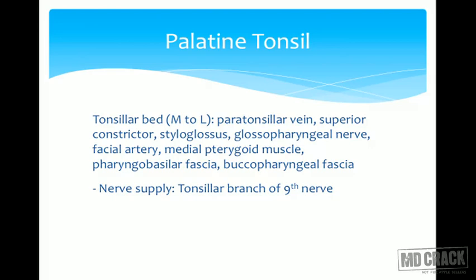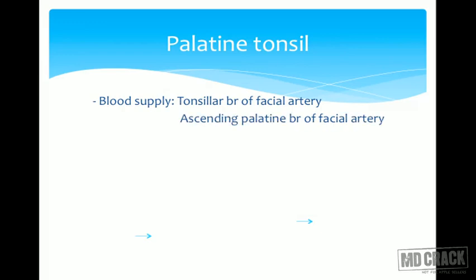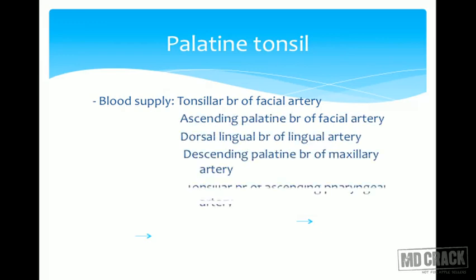The nerve supply of the tonsil is the tonsillar branch of the 9th nerve (glossopharyngeal nerve). The upper part is sometimes supplied by the lesser palatine nerve. Blood supply comes from five arteries: tonsillar branch of facial artery, ascending palatine branch of facial artery, dorsal lingual branch of lingual artery, descending palatine branch of maxillary artery, and tonsillar branch of ascending pharyngeal artery.